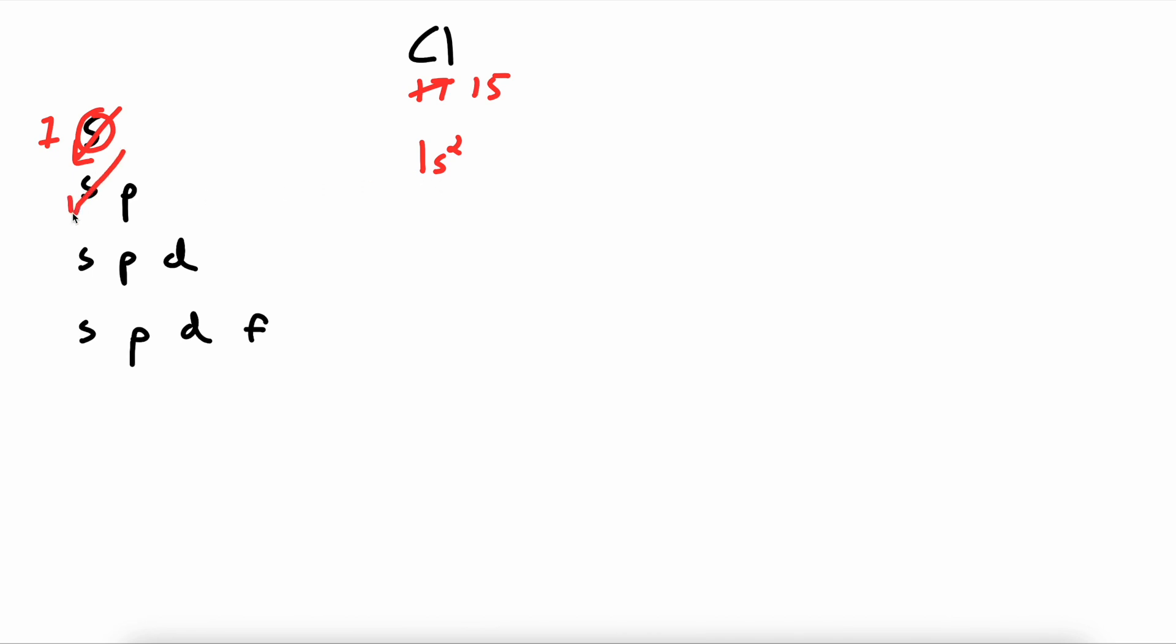We then go diagonally once more. We hit an S again in our second energy level. So we write a 2, S, 2. And we cross out 2 electrons from our total. We go diagonal once more.